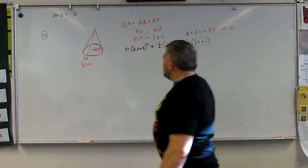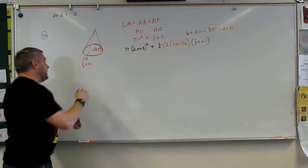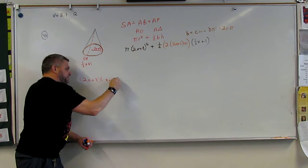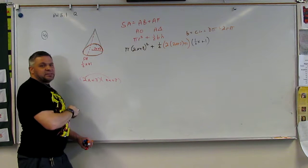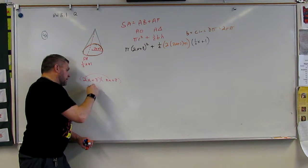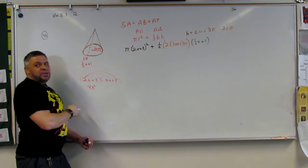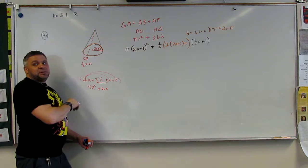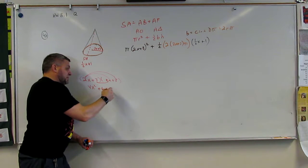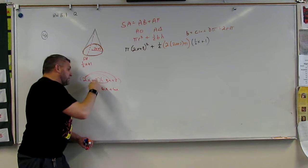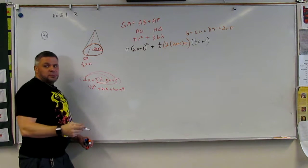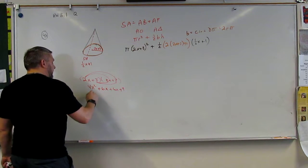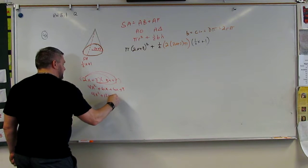Now, there's a rule for these squares. We could do it, we could say it's 2x plus 3 times 2x plus 3. And we could say, what's 2x times 2x? 4x squared. What's 2x times 3? 6x. What's 3 times 2? 6x. And then what's 3 times 3? 9.